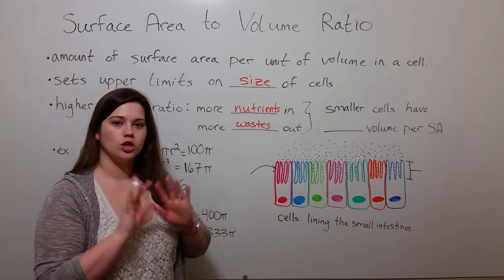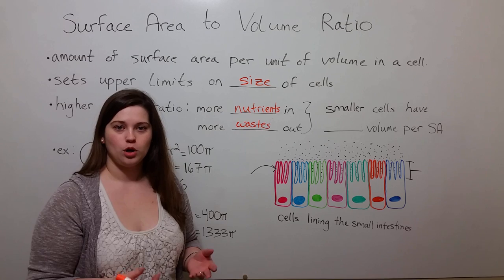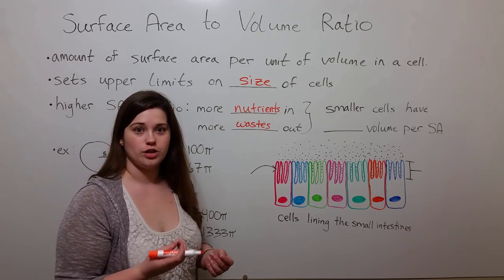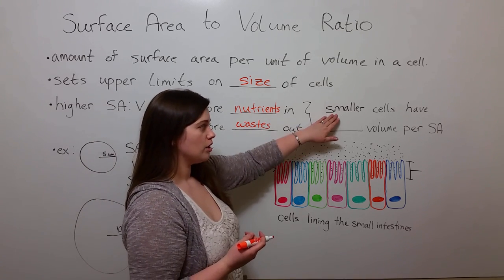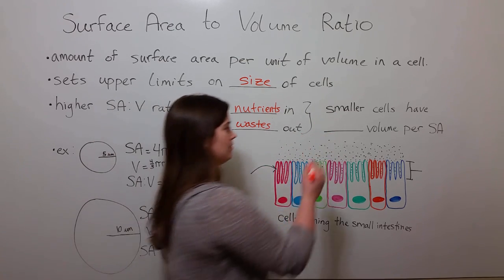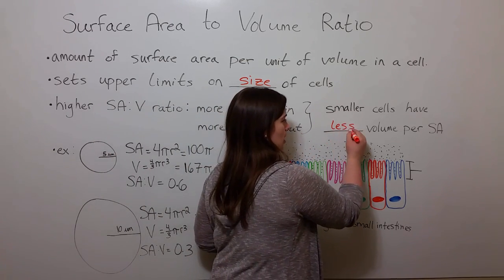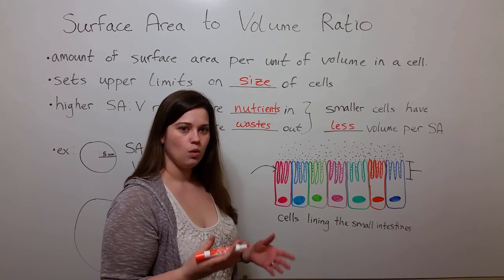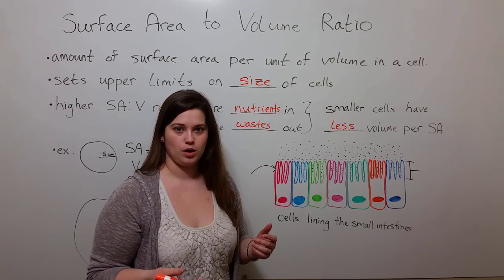So when a cell has more surface area per unit of volume, this is a good thing. Smaller cells have that. They have less volume per surface area or more surface area per volume.